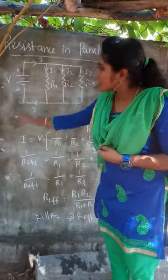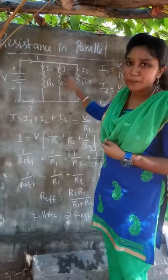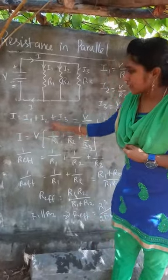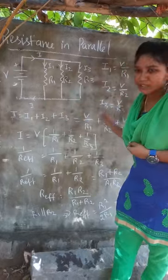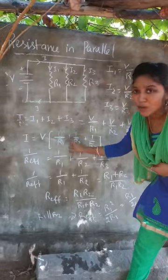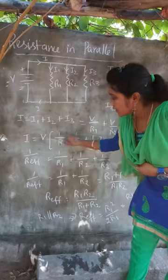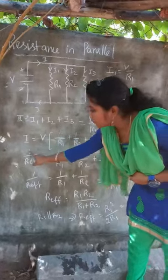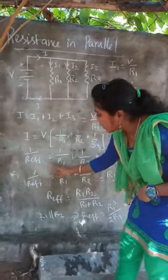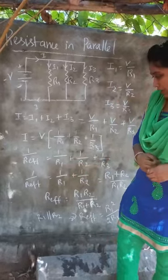The total current is equal to the sum of the branch currents: I = I1 + I2 + I3. Substituting I1, I2, and I3, we get I = V × (1/R1 + 1/R2 + 1/R3). Therefore, the effective resistance formula for a parallel connection is: 1/R_effective = 1/R1 + 1/R2 + 1/R3.